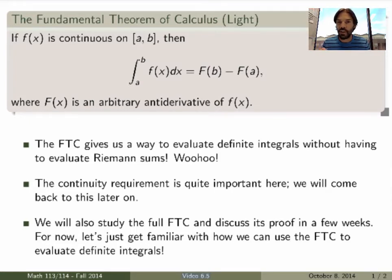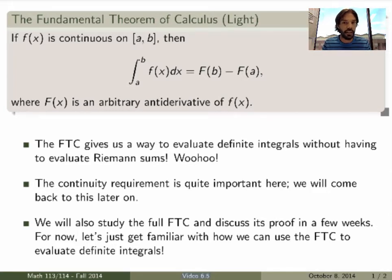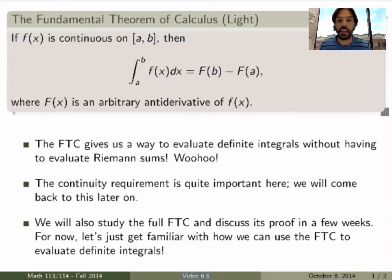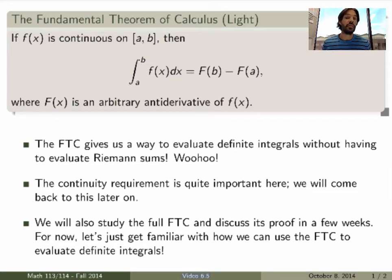Isn't it awesome? It's really nice because Riemann sums are ugly and we don't want to deal with them. The way the FTC tells you how to evaluate a definite integral is: first find an antiderivative, or find the indefinite integral of your function, and then evaluate the difference of two antiderivatives at the two endpoints. The requirement of continuity is actually super important, but for now let's forget about that — we'll come back to the details and the proof of the FTC in a few weeks.